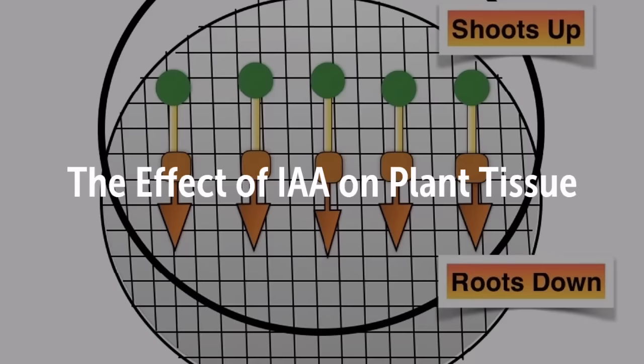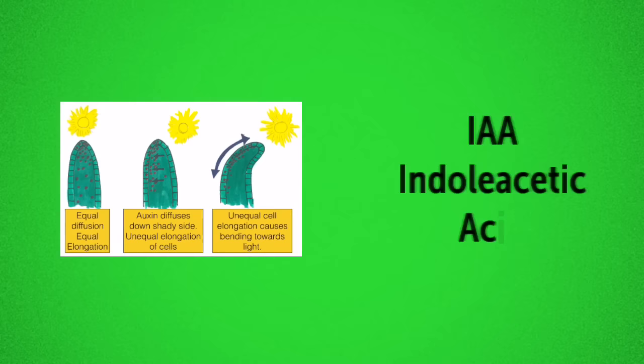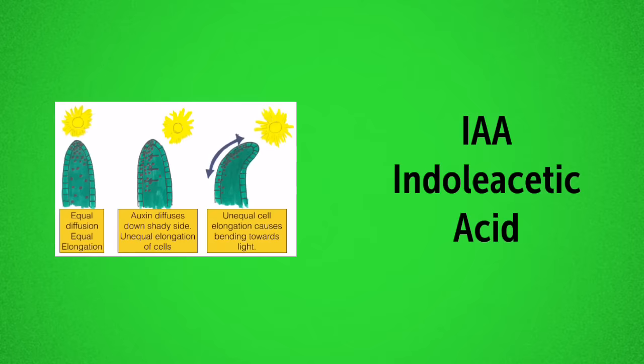This video looks at that practical where you investigated the effect of indole acetic acid, that auxin, on plant tissue. IAA, known as indole acetic acid, belongs to the group of plant chemicals known as growth regulators.